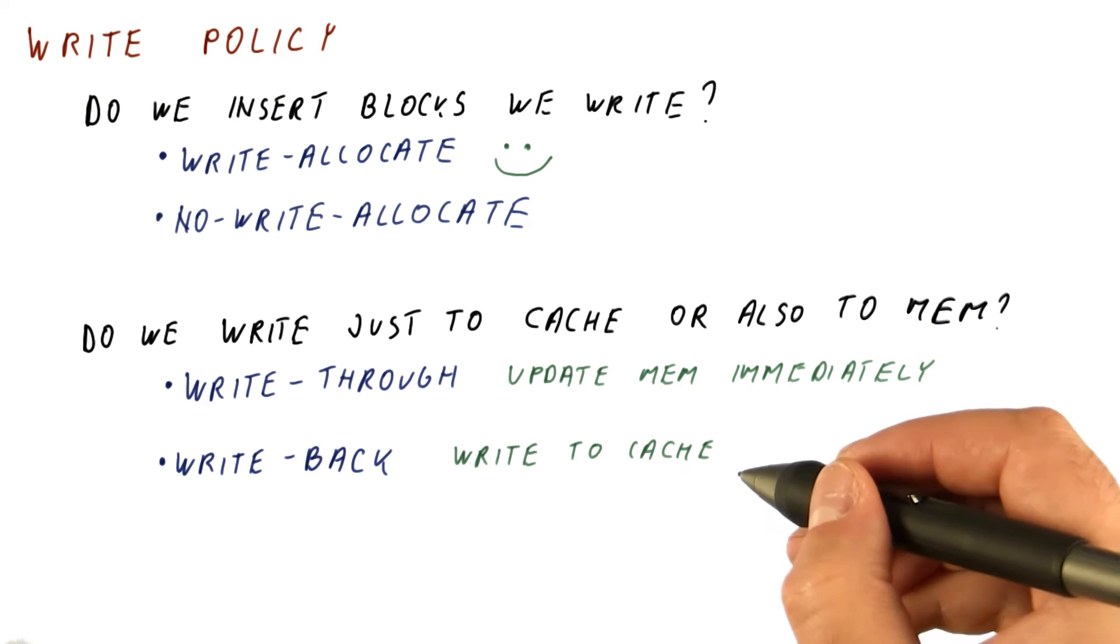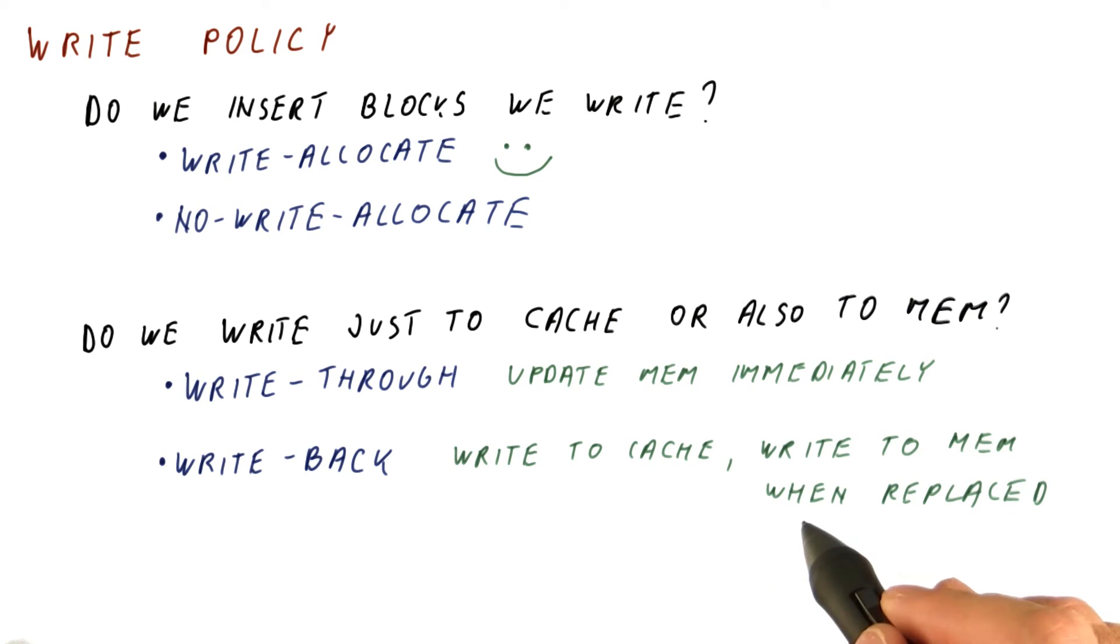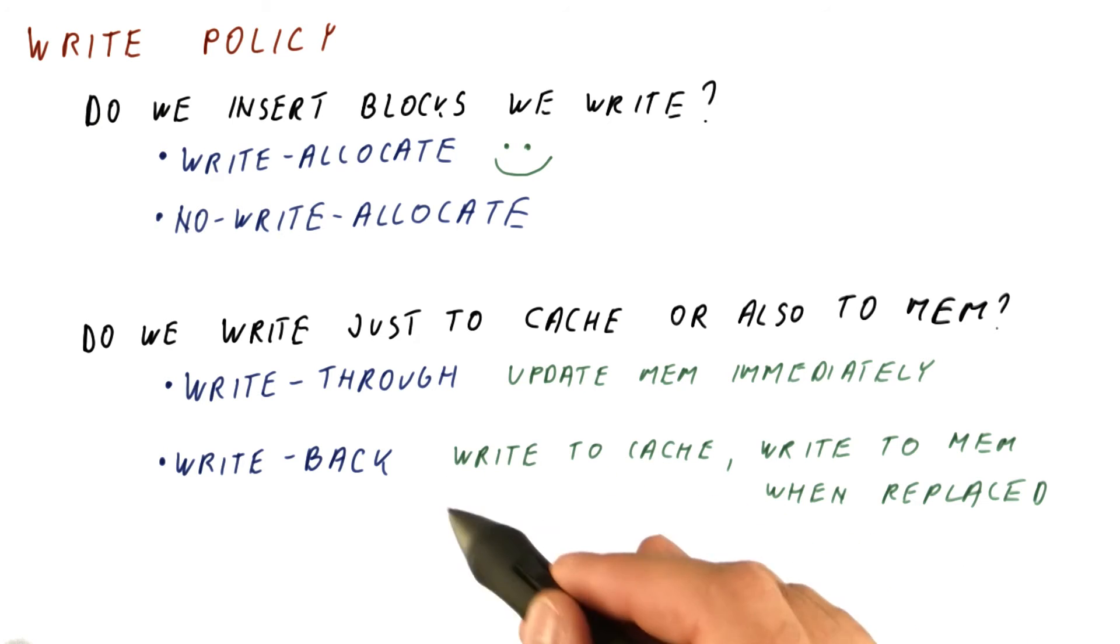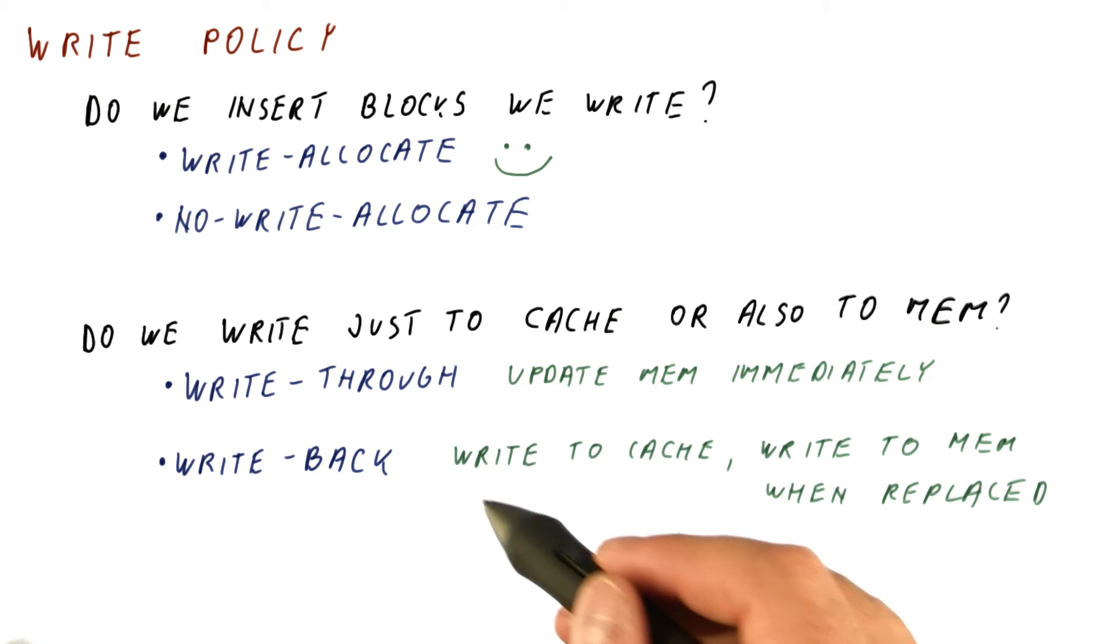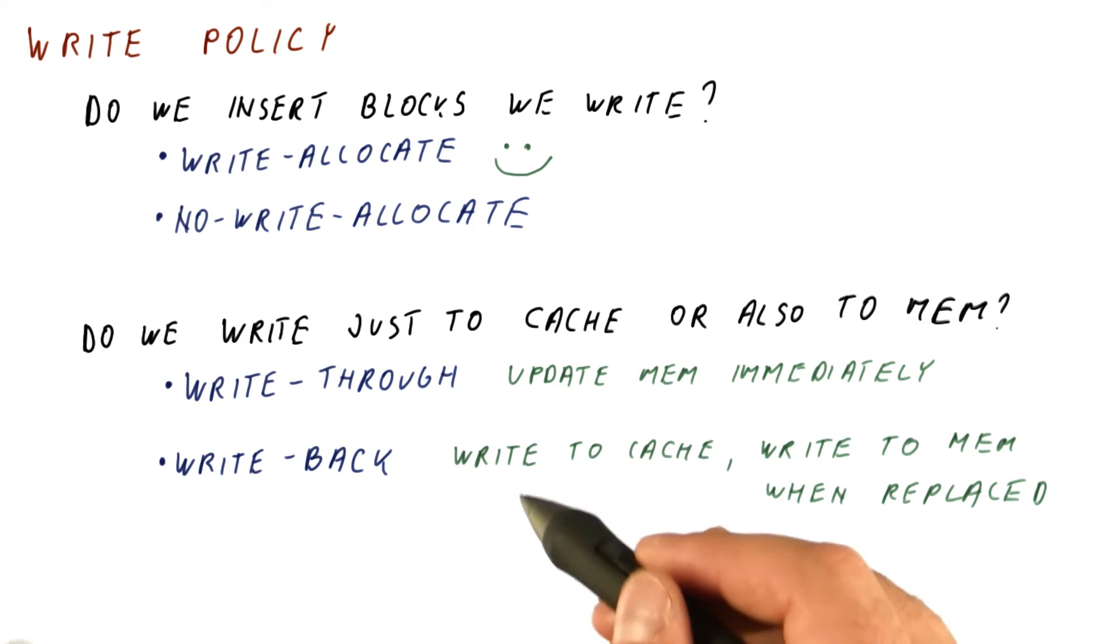Or we can have a write-back cache, where we only write to the cache, and we write to the memory only when the block is replaced from the cache. We cannot just discard the block at this time, because the memory does not have the most recent version of the block. So the memory has to be updated once the block is no longer in the cache. But as long as it's in the cache, we will just keep writing to the cache, and not keep memory up to date.